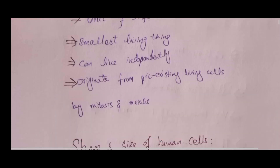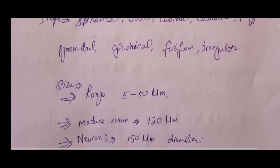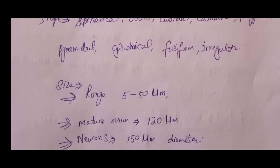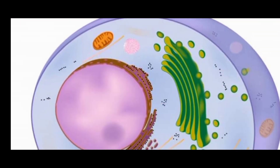What is the shape and size of the cell? Cells come in different shapes and sizes. Their shape may be spherical, oval, cubical, columnar, pyramidal, cylindrical, fusiform, or irregular. Their size ranges from 5 to 50 micrometers. The mature ovum may be 120 micrometers and the largest neuron may be 150 micrometers in diameter.